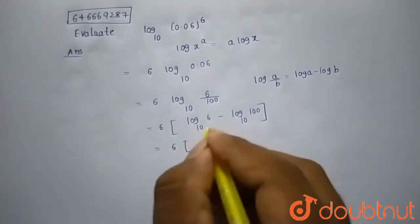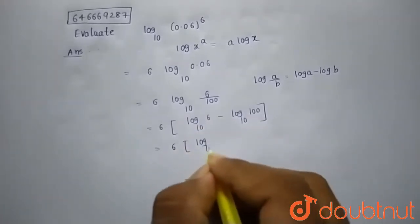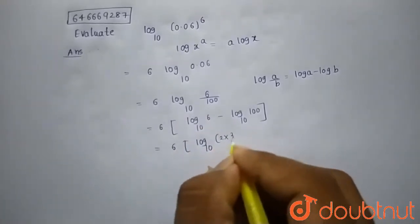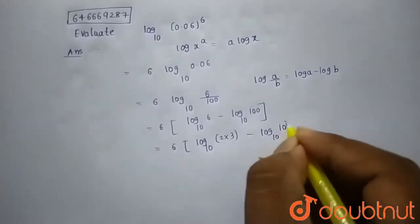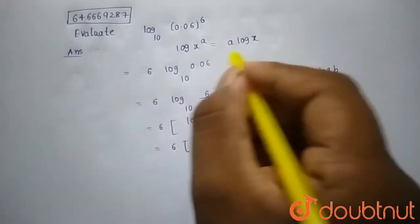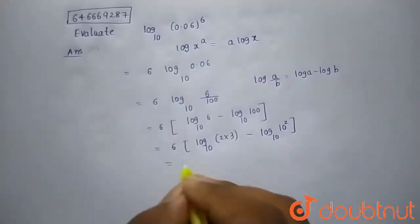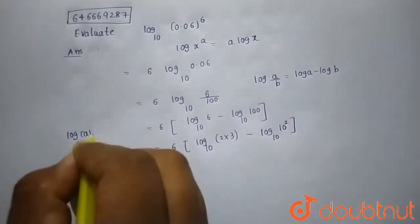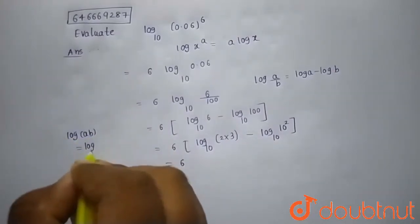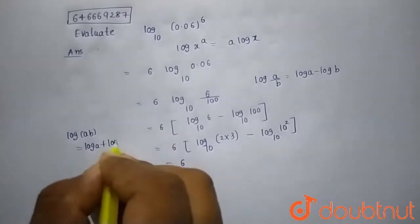I can write this log 10 6 as log of 2 into 3 to the base 10 and I can write 100 as 10 square. Now we know that by same formula, by same property I can write it as. And we know that log a b is equals to log a plus log b.